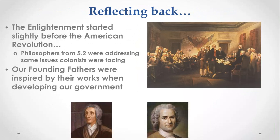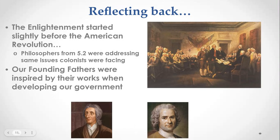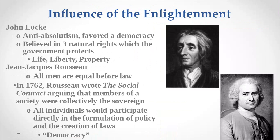With the forefathers starting the new country of the United States of America — even though they hadn't won the war yet — they were already thinking about how they wanted the country to operate. It's important to note this is happening at the same time as the Enlightenment philosophers we talked about in Lesson 5.2, who were throwing out ideas of democracy and checks and balances. Our forefathers said, 'This is crazy enough to work.' We're really going to highlight two: John Locke, who favored democracy and three natural rights — life, liberty, and property, or the pursuit of happiness. This is the foundation of our country.